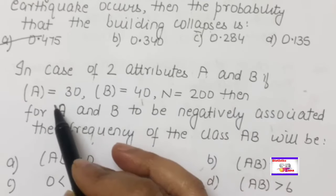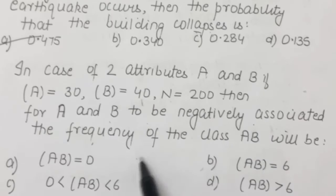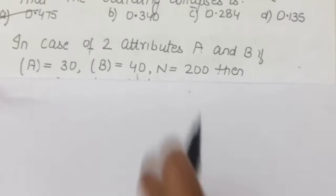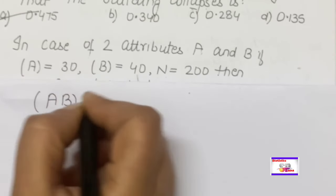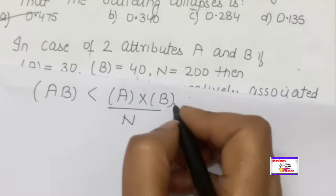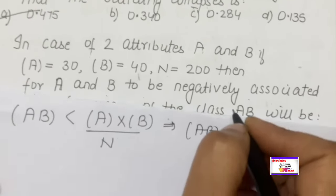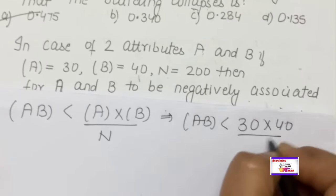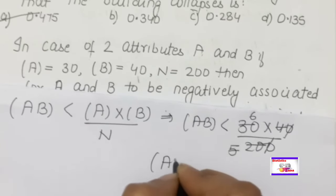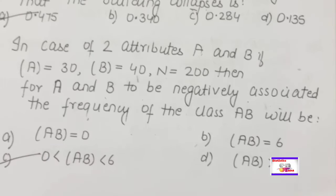In the case of two attributes, if (A), (B), and N (total frequency) are given, for A and B to be negatively associated, the frequency of class (AB) must satisfy a condition. You need to know the condition for negative association of attributes. Using the formula for negative association, with the given values — (A) = 30, (B) = 40, N = 200 — calculate: (AB) < (A)(B)/N = 30×40/200 = 6. So (AB) must be less than 6.